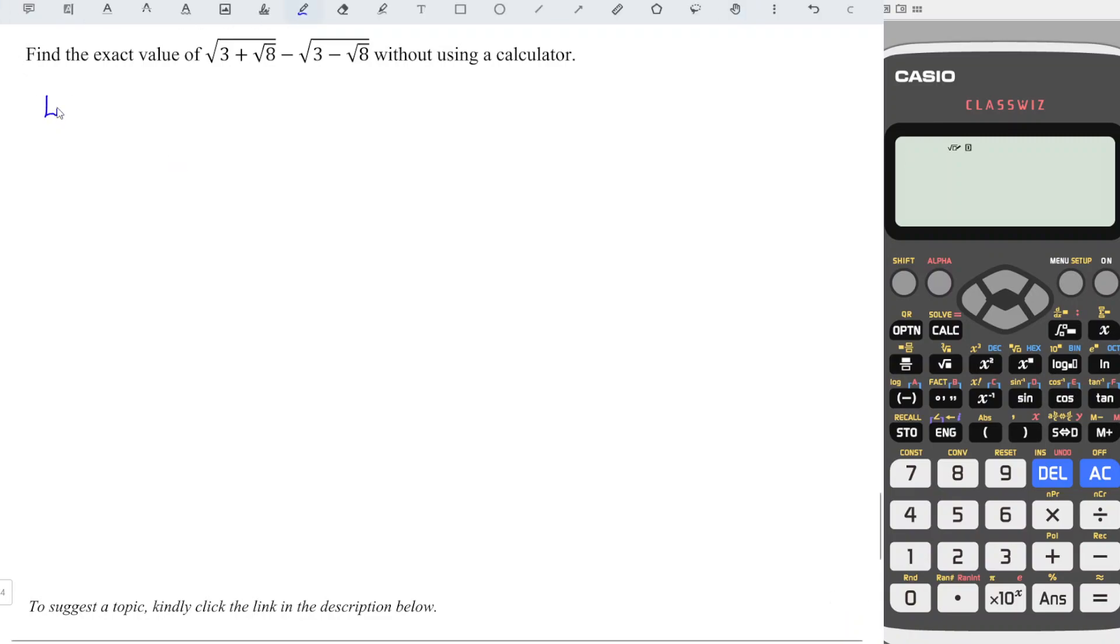So what we have to do here is first we can let x equal to √(3+√8) minus √(3-√8). Then we square both sides.